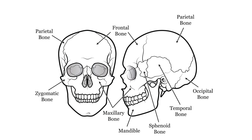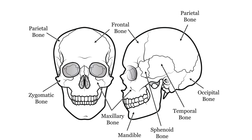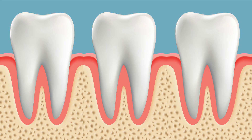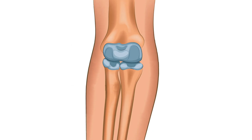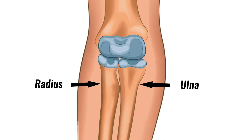Examples of fibrous joints are found between the bones which make up the skull, where your teeth are held to their bony sockets in the mouth, and between the radius and ulna in the elbow.